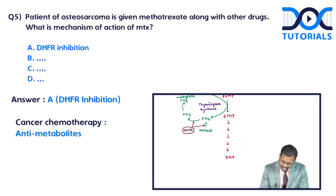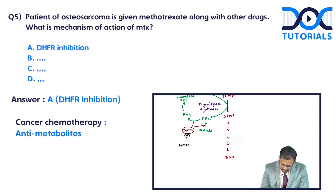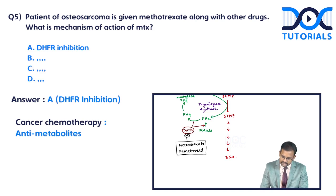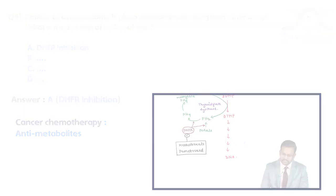Dihydrofolate reductase is inhibited by methotrexate and pemetrexate.